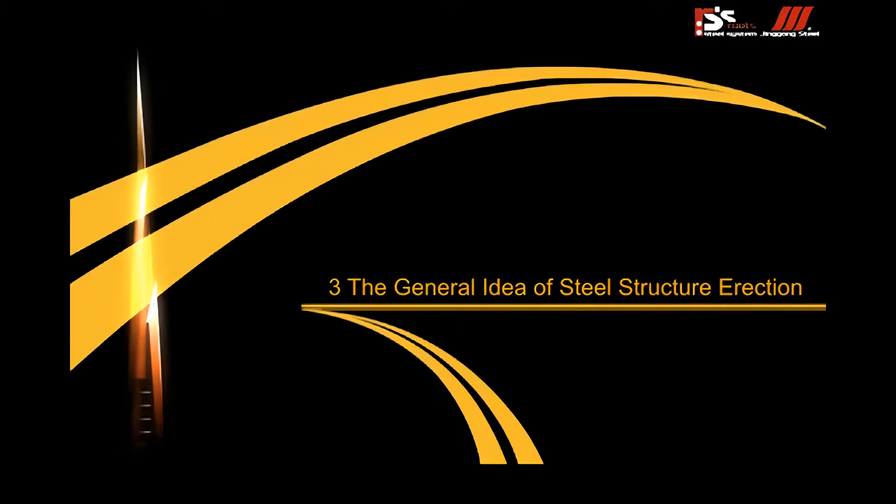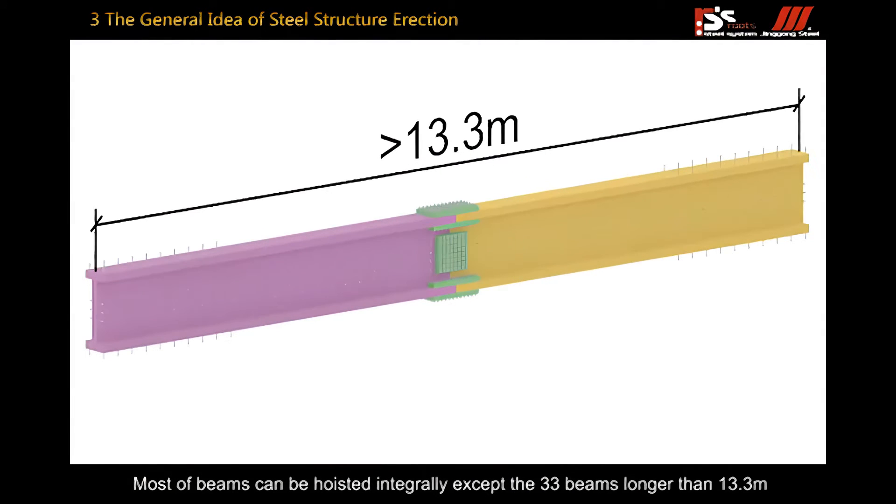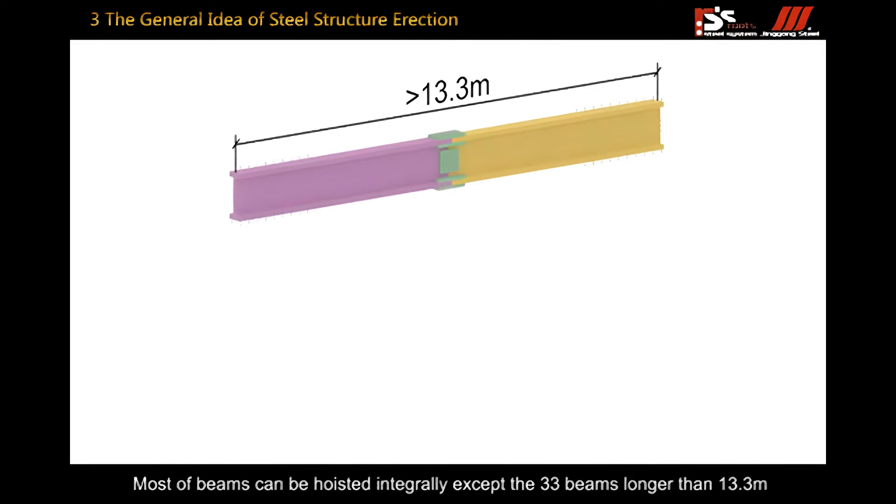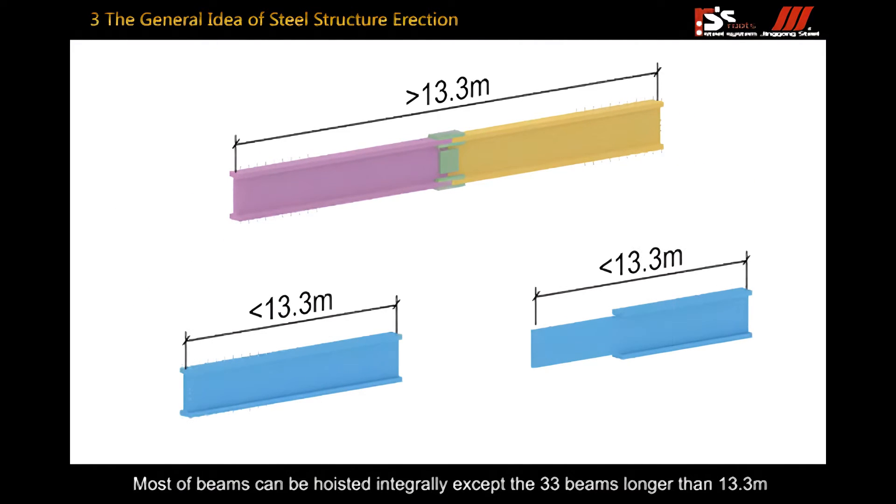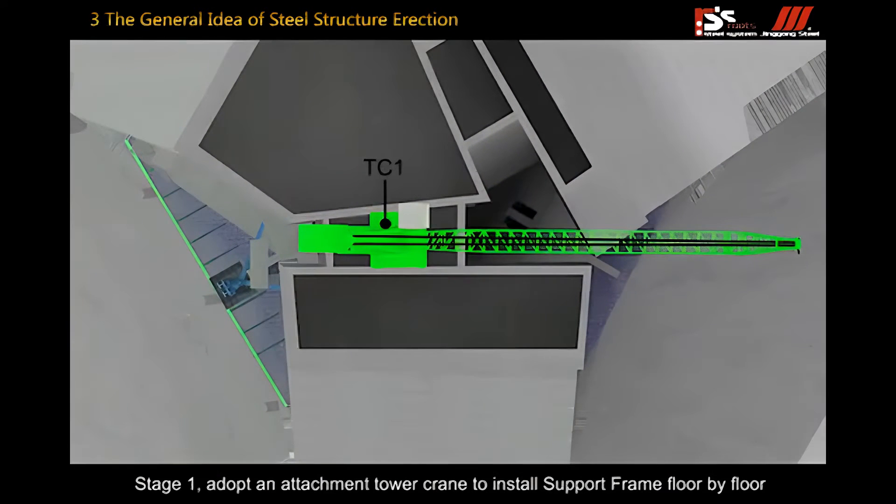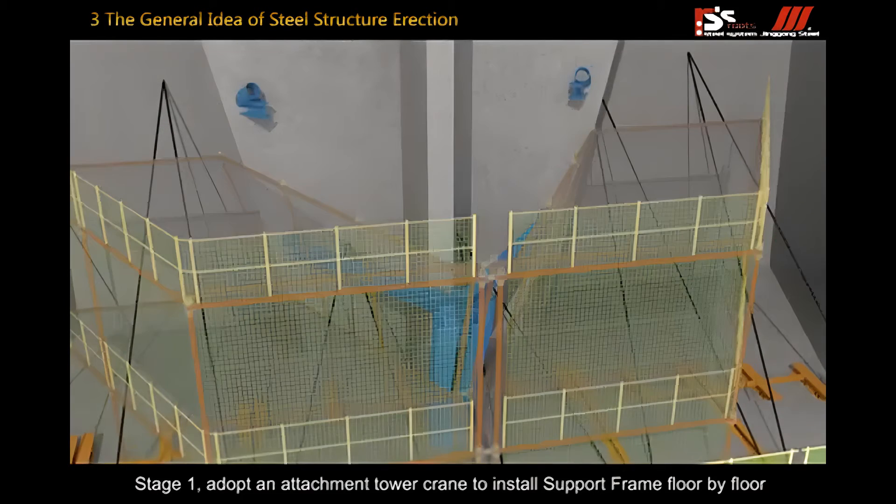Third, general idea of steel structure erection. Coupling beams will be hoisted by TC1, TC2 and TC3. Most beams can be hoisted integrally except the 33 beams longer than 13.3 meters which will be divided into two or three segments. The erection of sky terrace contains two stages. Stage one adopted tower crane to install support frame floor by floor.